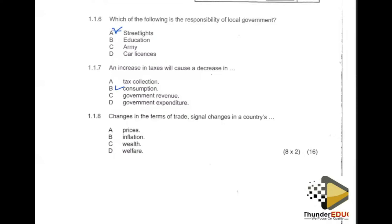Moving on to question 1.1.8: changes in terms of trade signal changes in the country's what? Terms of trade calls for international trade — it means there is a flow of goods and services between countries. Checking the options: prices is out, inflation is out, wealth is out, but welfare is correct. Our appropriate answer is welfare.